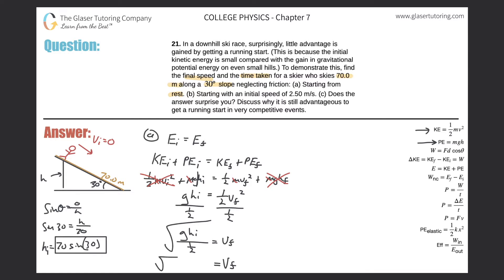Plugging in: it's the square root of 9.80 multiplied by the initial height of 70 times sine of 30, all divided by 0.5. Entering this into the calculator — square root of 9.8 times 70 times sine of 30, all divided by 0.5 — we get a value of about 26.2 meters per second.